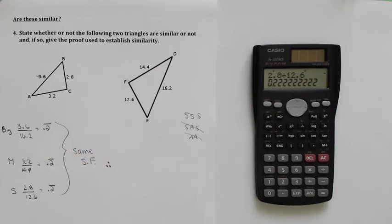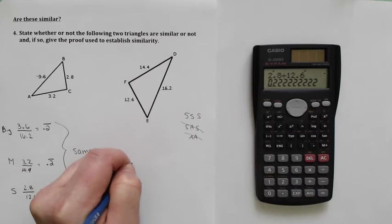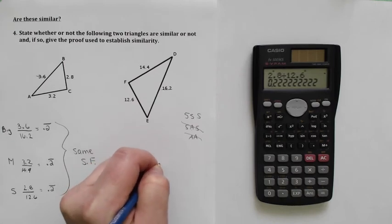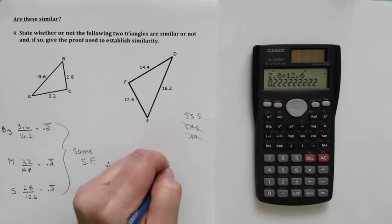Therefore, I can say triangle ABC is similar to triangle DEF.